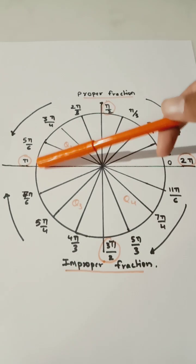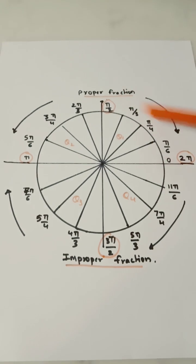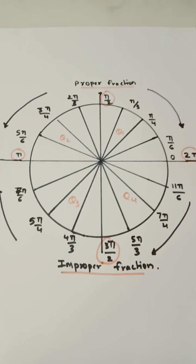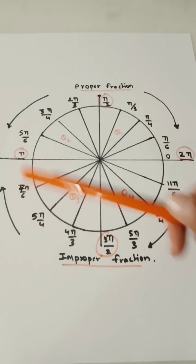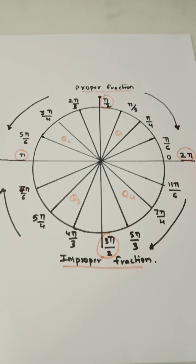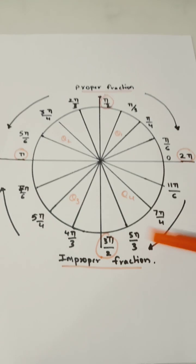From 0 to pi or 180 degrees, the top bit will be proper fractions. While pi or 180 degrees to 2 pi, 360 degrees, the bottom bit will be improper fractions.